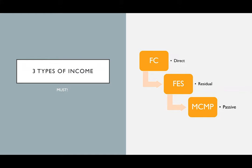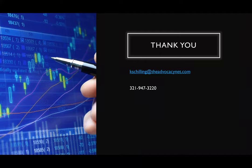We must teach people the three types of income, but we have to have them ourselves first. As a financial concierge you earn direct income. With Financial Education Services you earn direct and residual. With the Middle Class Millionaire Plan you create passive income as well. You can have multiple corridors of direct, residual, and passive income — not just one stream — and that's what we're trying to get you to truly grasp.